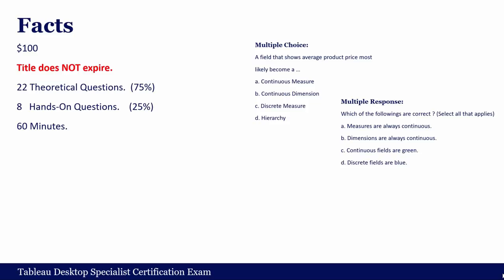There are two different formats for the theoretical questions: multiple choice and multiple response. In multiple choice questions, you select only one option, so they're straightforward if you know the concepts. However, in multiple response questions, you select many options, and unfortunately the number of options you should choose is not provided — they will ask you to select the correct options but won't tell you the exact number.